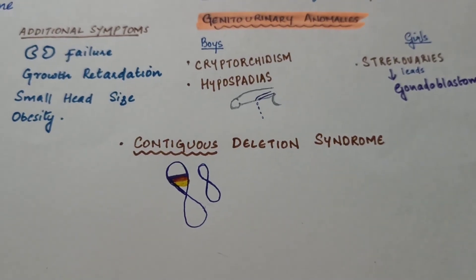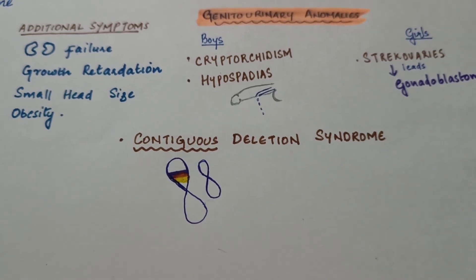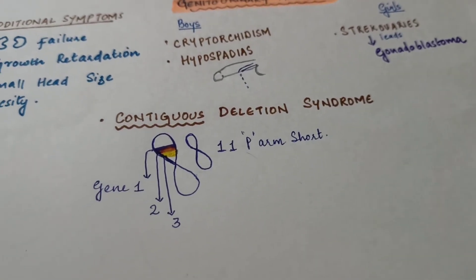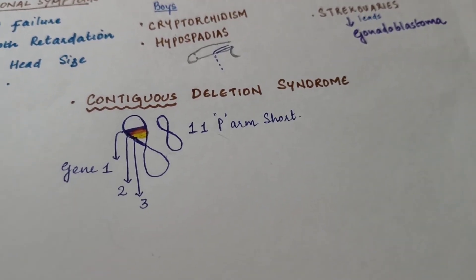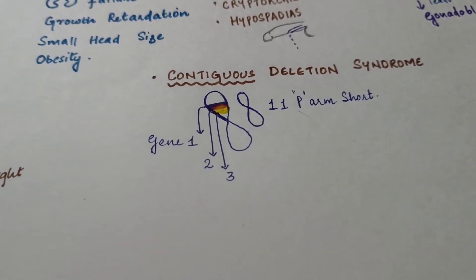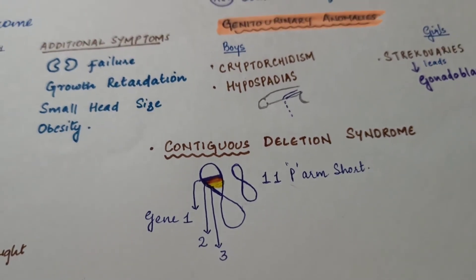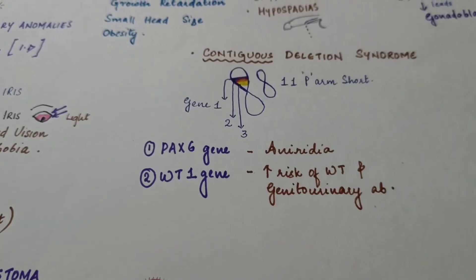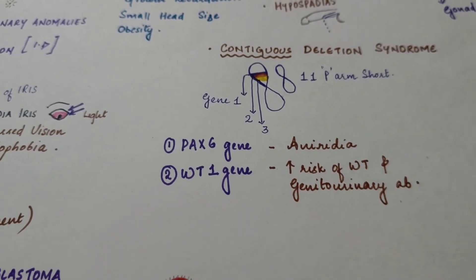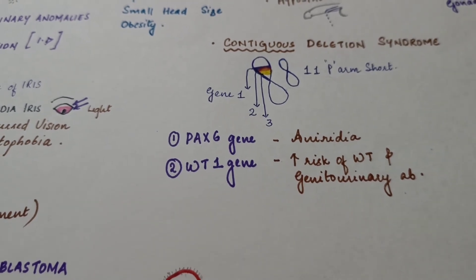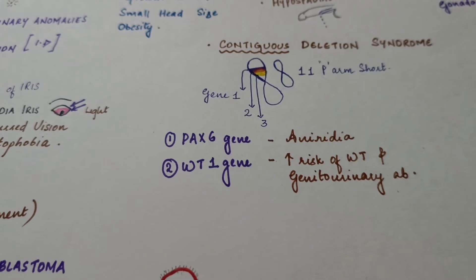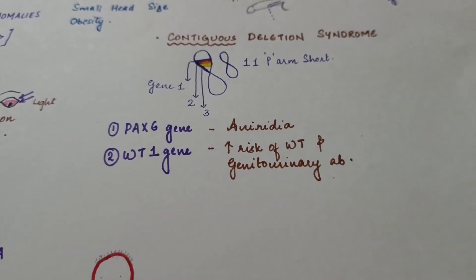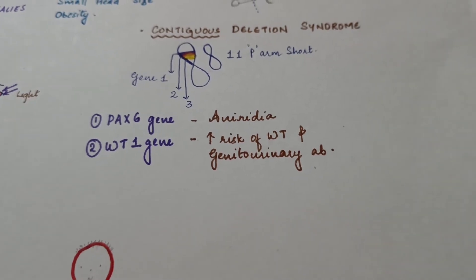WAGR syndrome is a contiguous gene deletion syndrome, meaning adjacent genes on the short arm (p) of chromosome 11 are deleted together. The two key genes are PAX6 and WT1. PAX6 deletion leads to aniridia, while WT1 deletion increases the risk of Wilms tumor and is responsible for genitourinary abnormalities.